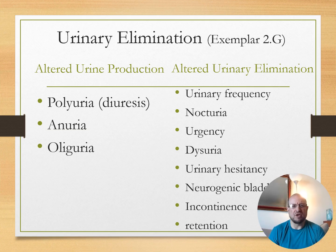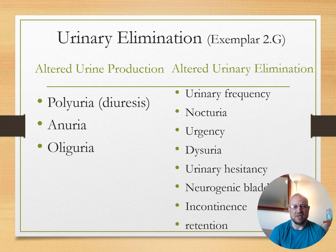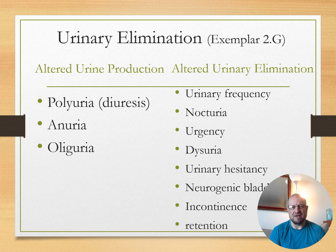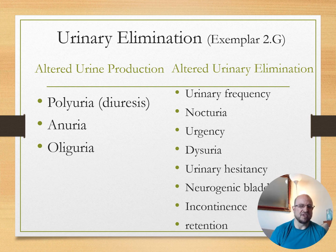Okay, so urinary elimination. There are a few alterations in urine production. One is polyuria, or diuresis — this is where the patient is urinating a lot. Anuria is really no urine production — that's bad. And oliguria, which is an abnormally small amount of urine production. That's not all that great, and it could progress into an anuria situation.